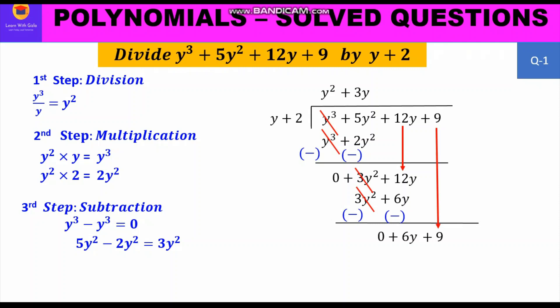Applying the three steps once more: division gives 6y ÷ y = 6, written on top next to y² + 3y. Another way: what multiplied by y gives 6y? That is 6. So the quotient so far is y² + 3y + 6.